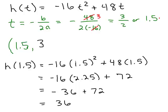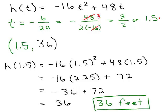So, that's the other part of the vertex point. And it's asking us for the maximum height of the ball and that would be this value right here of 36. So, we've got the maximum height of the ball is 36 feet.